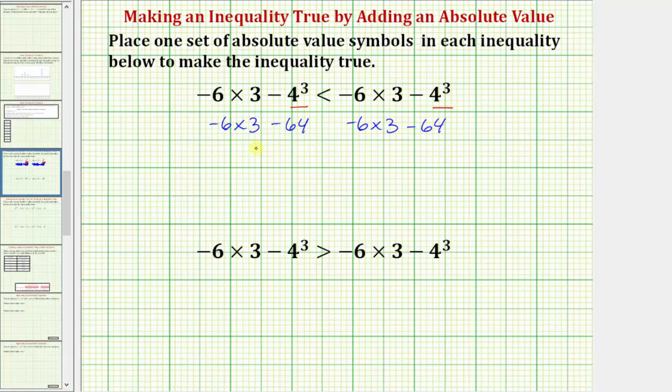Next, we multiply and divide before we add or subtract. The next step is to find this product. Negative six times three is equal to negative eighteen. So we have negative eighteen minus sixty-four, again on both sides. And then finally subtracting, negative eighteen minus sixty-four is equal to negative eighty-two.